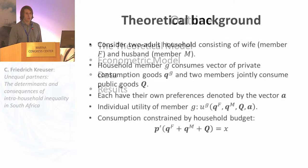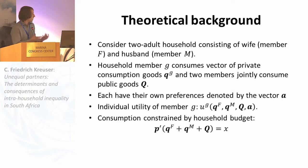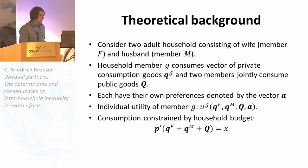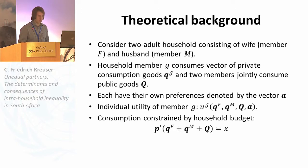We start by considering a two-adult household with a wife and a husband. We have a household member that consumes a vector of private consumption goods — goods that are excludable but not necessarily assignable, which is mainly an assumption we make due to the data. The two members jointly consume public goods. Each member has their own preference relation, preferences denoted by a vector A, and each member has their own utility which may be dependent on their own consumption of private goods, the spouse's consumption of private goods, public goods and preferences. Consumption is constrained by the household budget as normal.